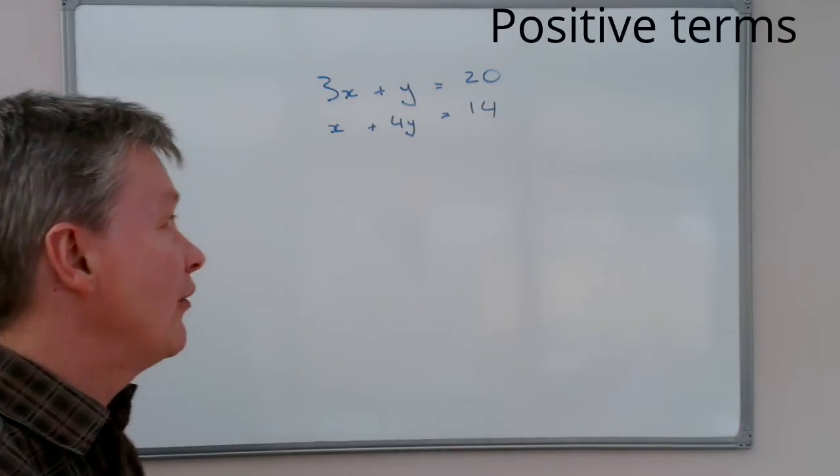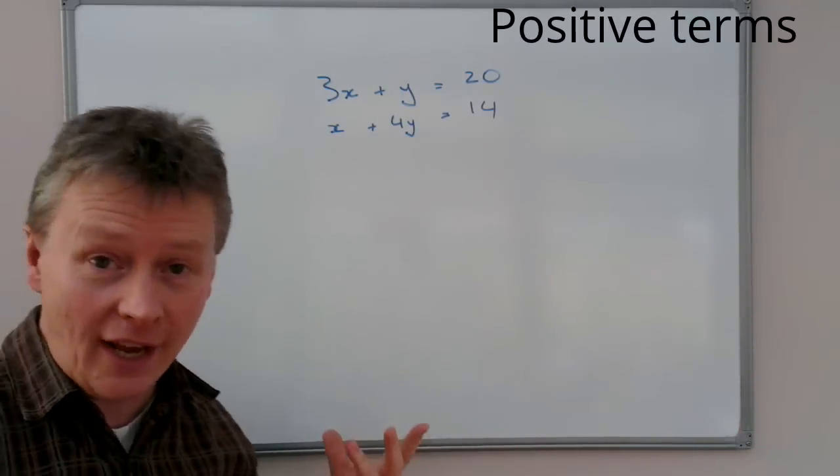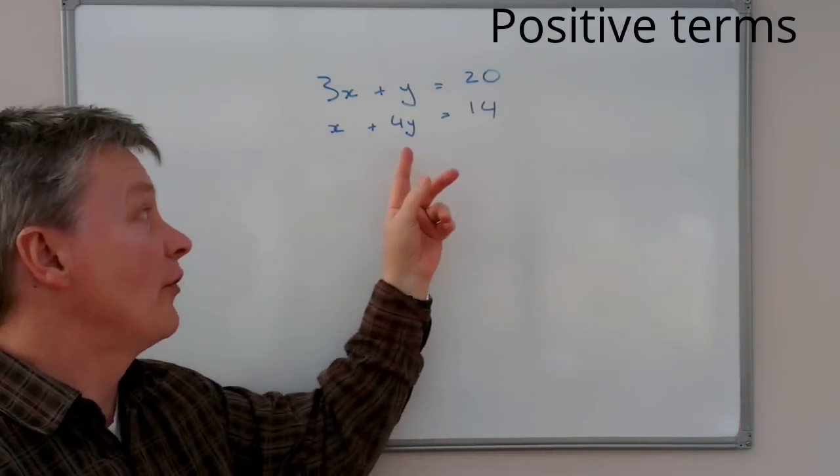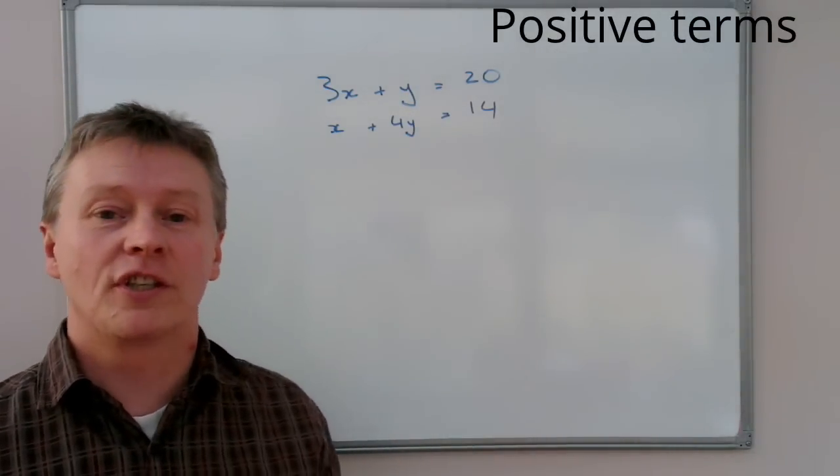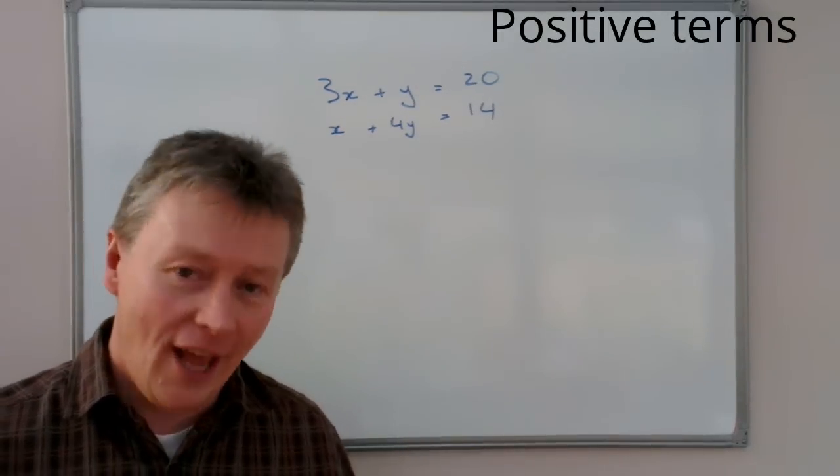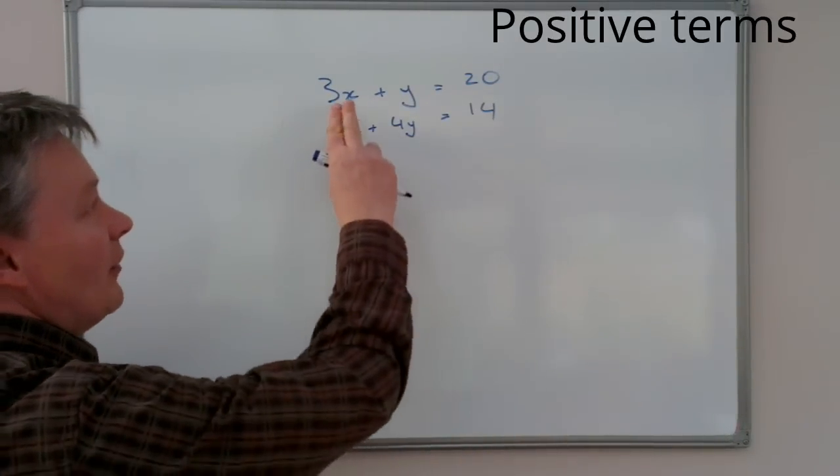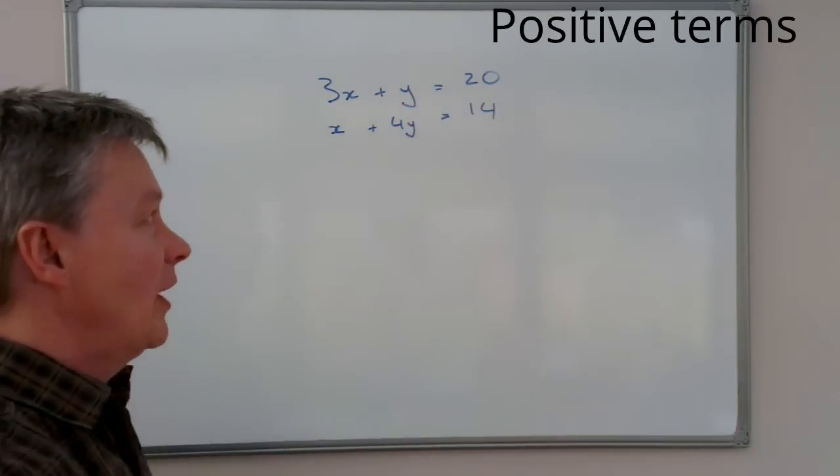So the way that we do that is by finding a way in which we can eliminate either the x terms or the y terms in order to just give us one x or one y term left. What I mean by that is that if you have a look at these equations,